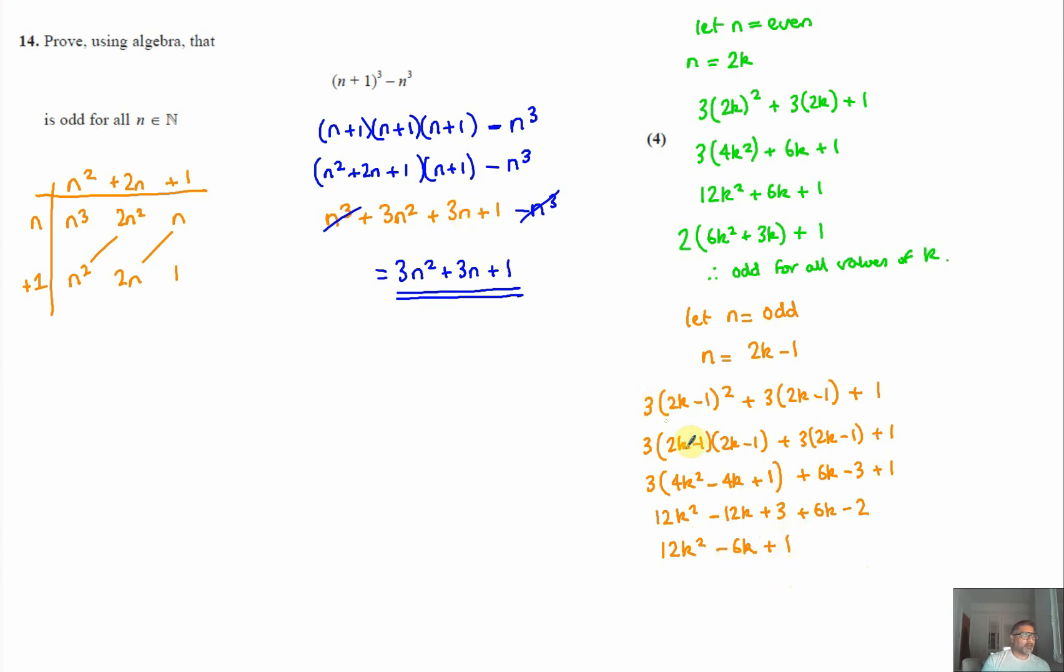And similarly before, if I take 2 out and factorize with that, that gives me 6k² - 3k + 1. And what that tells me then, for every odd number, if n is an odd number, no matter what I put in there, the outcome is going to be 2 times something, where k can be any value. And when you expand that out, that's going to give you 2 times the number, so that part will be even plus 1. So therefore, it's odd for all values of k.